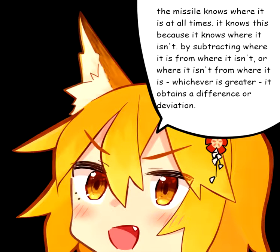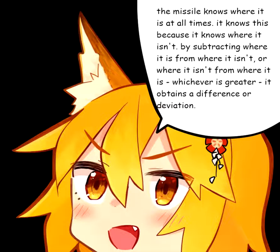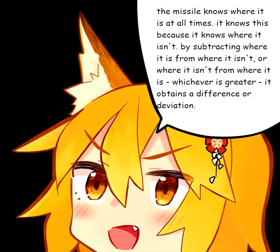The missile knows where it is at all times. It knows this because it knows where it isn't. By subtracting where it is from where it isn't, or where it isn't from where it is, whichever is greater, it obtains a difference or deviation.